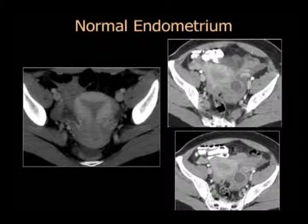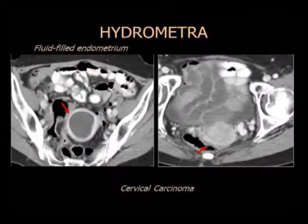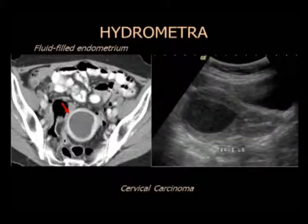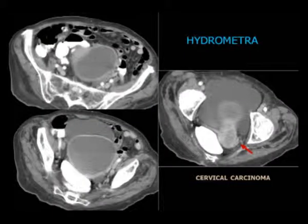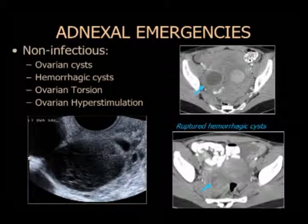No es fluido endometrial, es simplemente la fase del ciclo que cambia su forma. Cuando empezamos a ver una imagen redondeada, cuando ya no hay triángulo, hay que pensar en fluido endometrial. Esta paciente tiene un pequeño carcinoma cervical con fluido en la cavidad. Otra paciente: gran distensión con el útero lleno de fluido, y hay un pequeño carcinoma cervical.